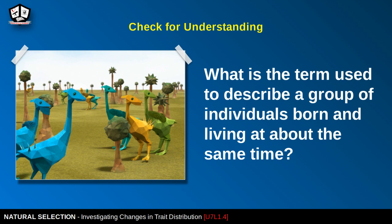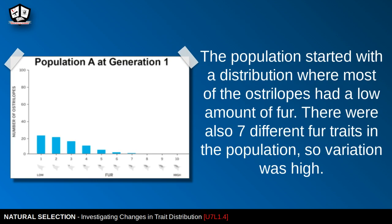What is the term used to describe a group of individuals born and living at about the same time? In population A at generation one, the distribution started with most ostrilopes having a low amount of fur — you can see that at levels one and two on the histogram. There were also seven different fur traits in the population, so variation is high at generation one.